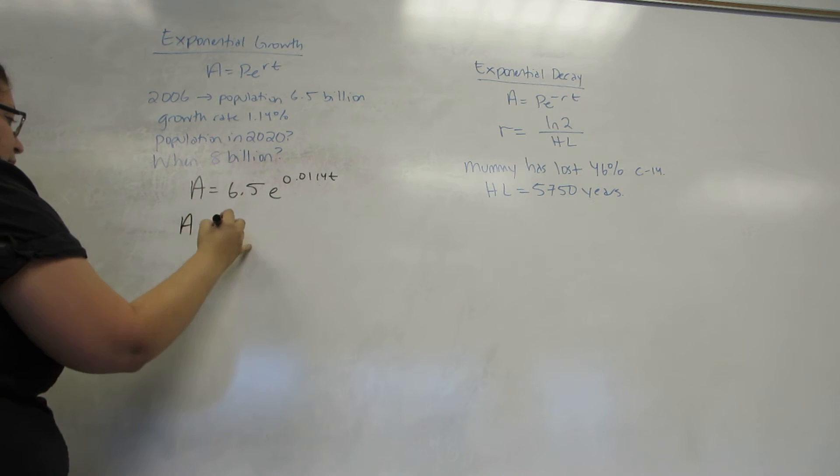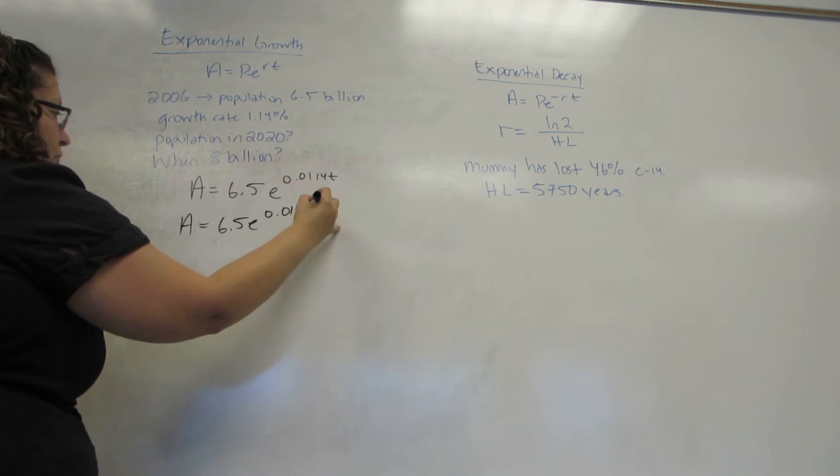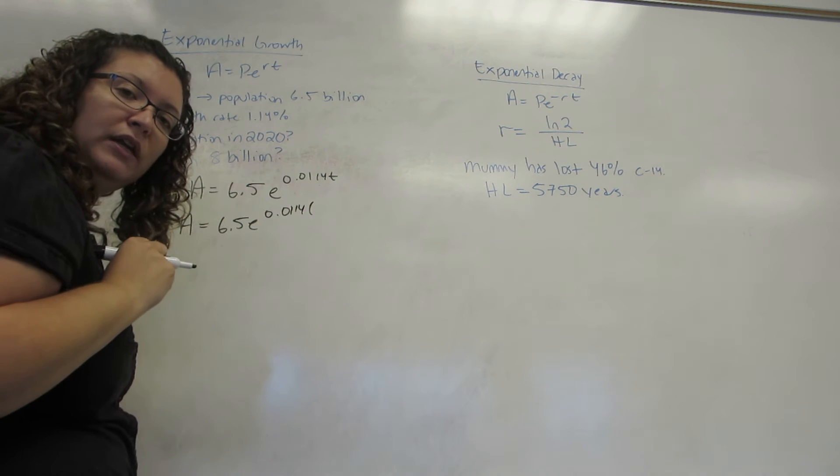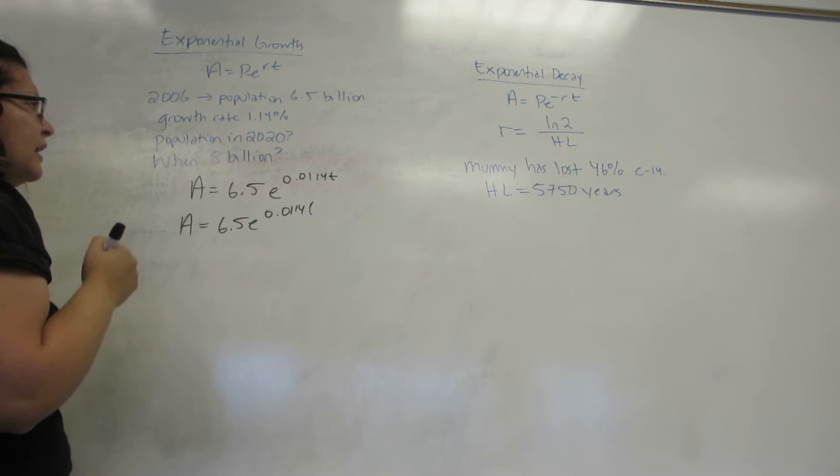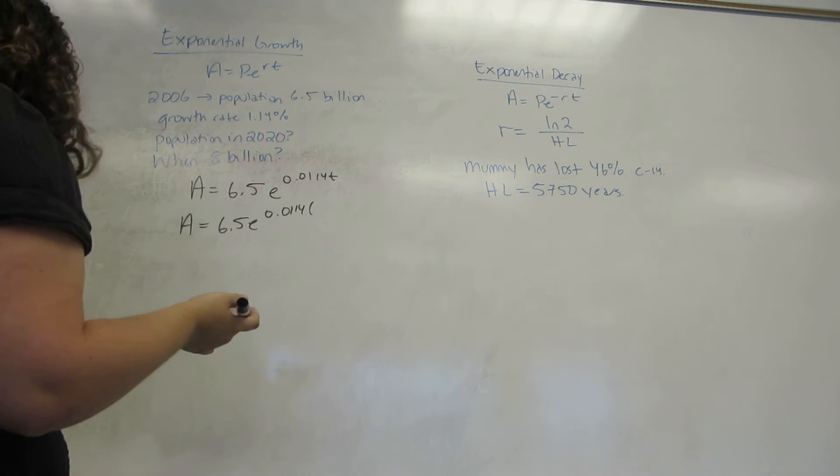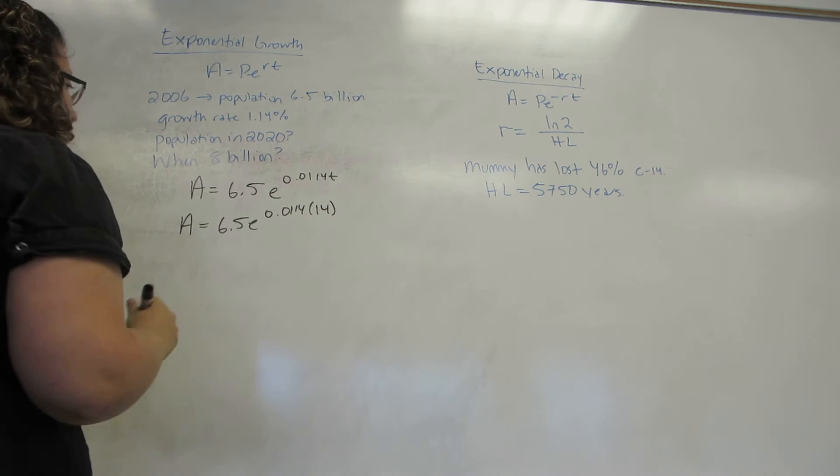Now, I'm not going to be plugging 2020 in for T, because if you notice, 6.5 was my initial or beginning population in 2006. So, T is actually going to be the years since 2006. So, in this case, we are looking at a 14-year difference.